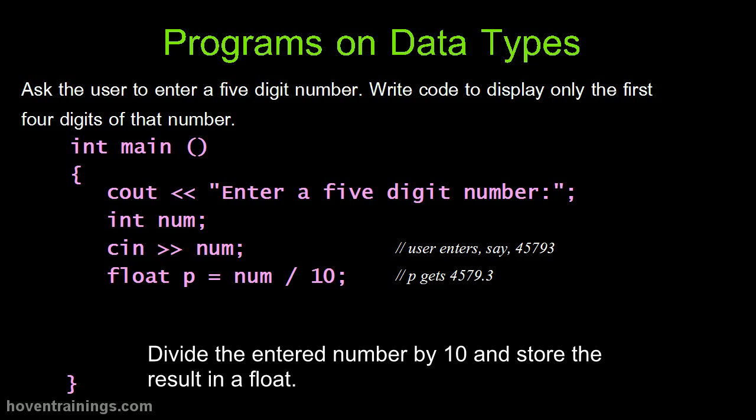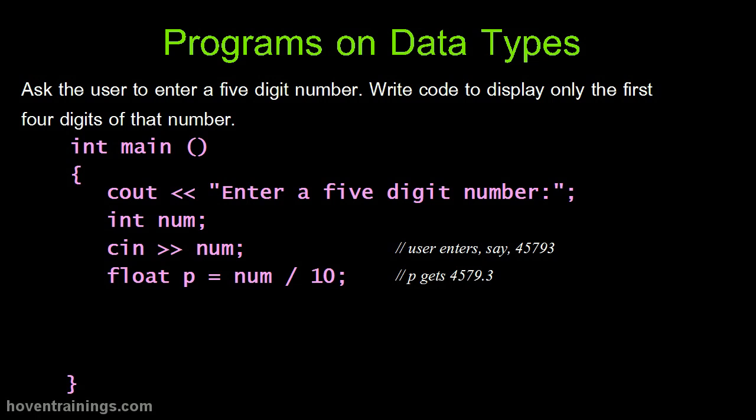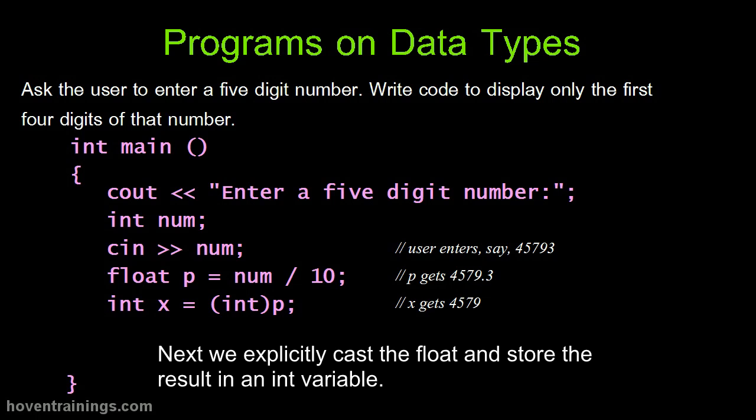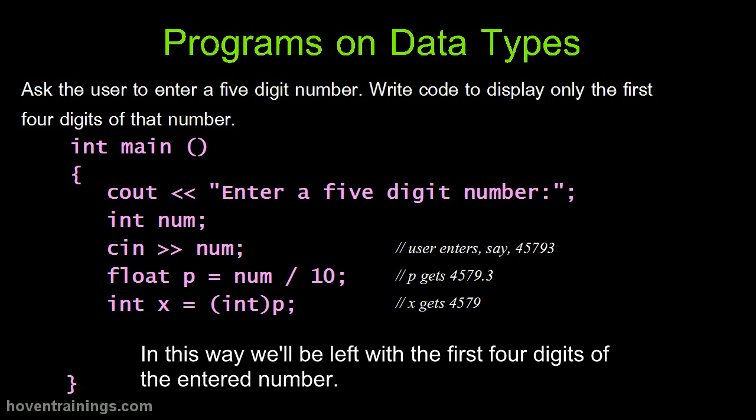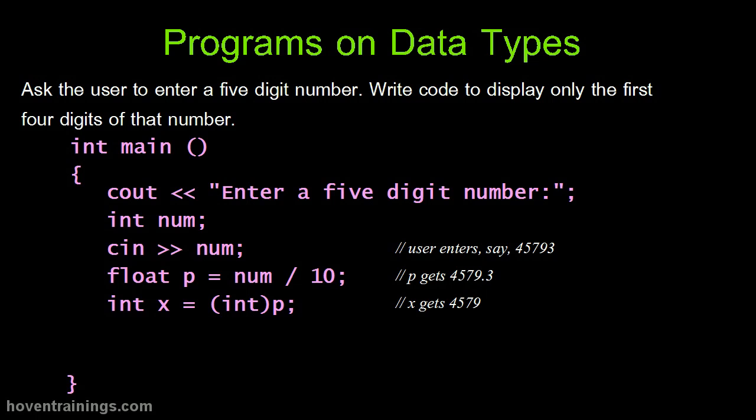Divide the entered number by ten and store the result in a float. Next we explicitly cast the float and store the result in an int variable. This casting will help us remove the fractional part. In this way we'll be left with the first four digits of the entered number. Lastly, display the number.